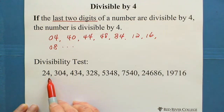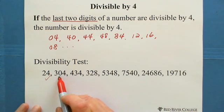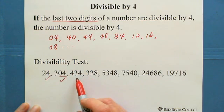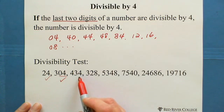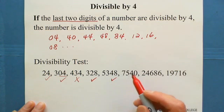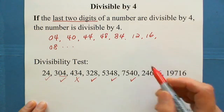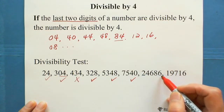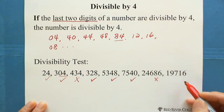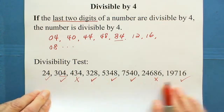For example, 24: if you're familiar with the multiplication table, 24 is divisible by 4. For 304, the last two digits are 04, which is divisible by 4. And 34: even though the last digit is 4, 34 is not divisible by 4 — because 32 is divisible by 4, so 34 is not. 28 is divisible by 4 because 4 times 7 equals 28. So 48 is divisible by 4. 40, of course. And 86: since 84 is divisible by 4, 86 is not. And 16, yes. So whatever the number of digits, just look at the last two digits.